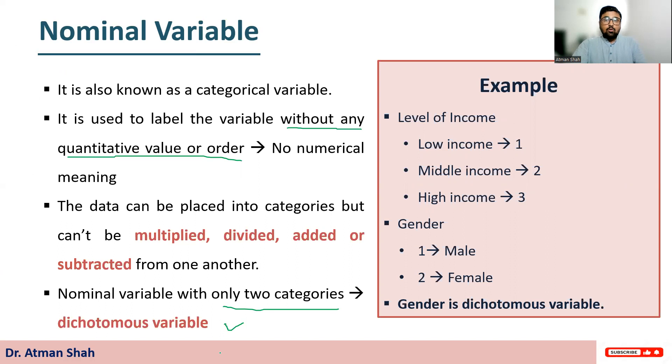So here you can see these numbers 1, 2 and 3 have no numerical meaning. So you can assign any number. I can assign 99 to male and 100 to female, because there is no numerical meaning of these numbers.